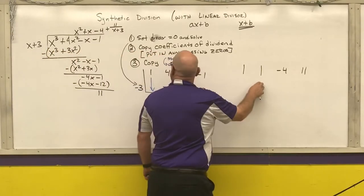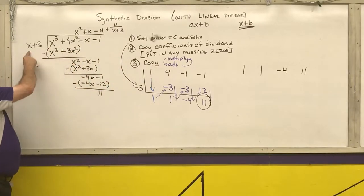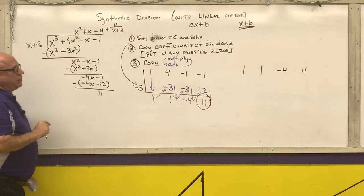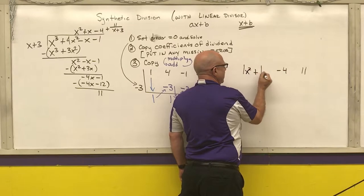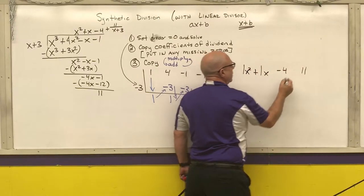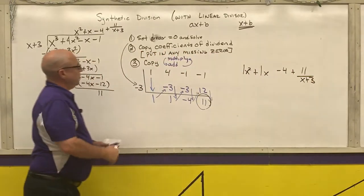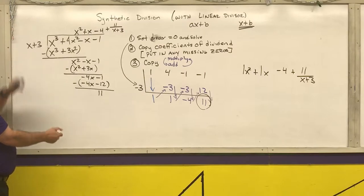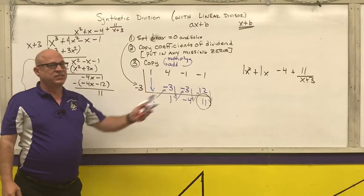This doesn't look like the answer I wrote down — it's close. I took a cubic divided by a linear, so my final answer is going to be a quadratic because it's one degree less. Starting with my left-hand term, I make that an x squared, plus 1x, minus 4, plus my remainder. This small amount of work right here replaces all of that long division, which can take quite a bit of work.